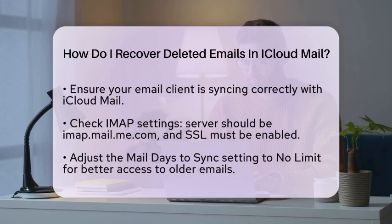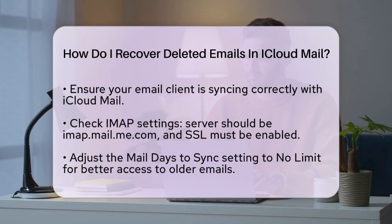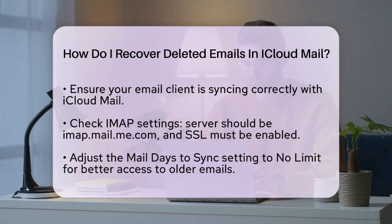It is essential to ensure that your email client is set up to sync with iCloud Mail correctly. This means checking your settings to make sure all mail categories are syncing properly. If you are using IMAP settings, make sure the server is set to imap.mail.me.com and that Secure Sockets Layer is enabled. Another helpful tip is to adjust the mail days to sync setting in your client — setting this to no limit allows you to retrieve older emails that may not show up right away.